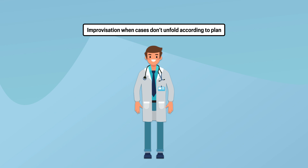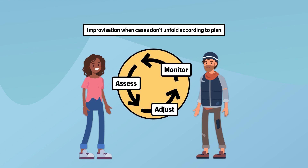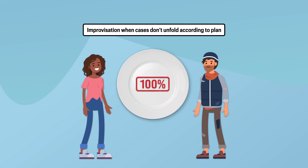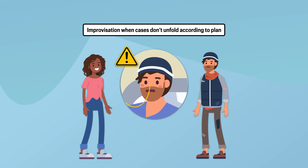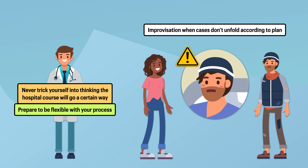The second concept concerns improvisation when cases don't unfold according to plan. Even though a simple process is outlined where the patient remains on tube feeding and gradually increases oral intake, this differs from what sometimes happens in practice. Sometimes patients start eating 100% or more of their meals on the very first day, and their ability to meet nutritional needs by mouth is so obvious that there's no need to keep the feeding tube in place. Other times the feeding tube may fall out, and the team may be unable to replace it or the patient may be unwilling to receive a new one, at which point your plan for careful weaning gets lost. You should never trick yourself into thinking the hospital course will go a certain way — prepare to be flexible with your process.